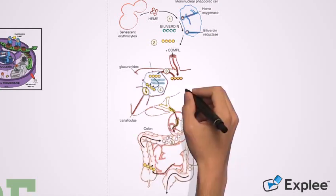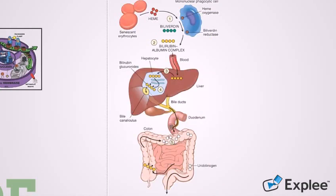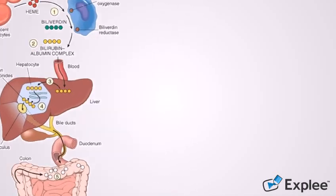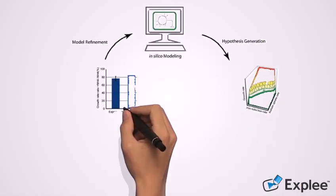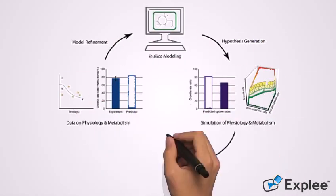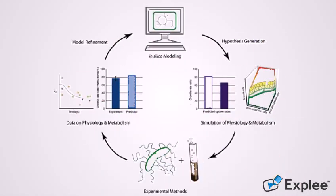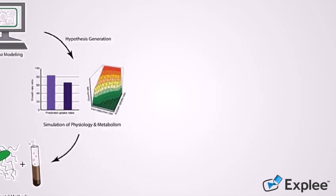Scientists use genome-scale metabolic models that provide a great analysis for many diseases and tissue-specific behavior such as liver metabolism. Scientists think that this will give a promising method to study gene-to-phenotype linkage and drug side effects association.